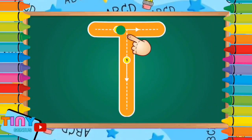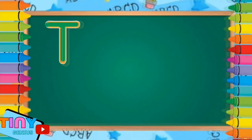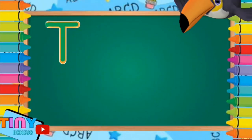Next we're going to learn the letter T. Pull down, across on the top. T is for toucan.